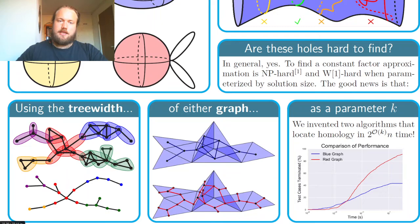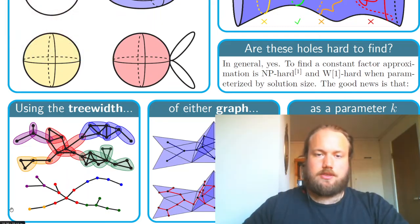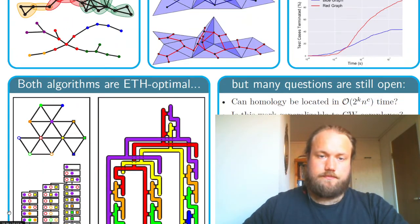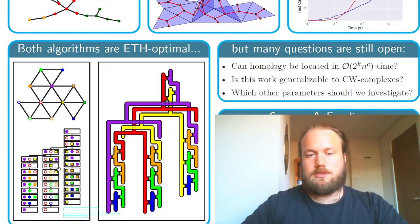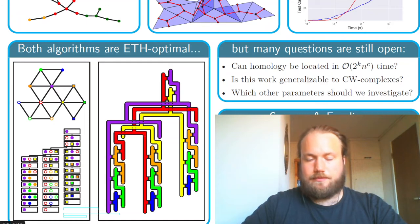We also proved the ETH optimality of these algorithms using a reduction from the max cut problem parameterized by tree width. The reduction takes instances of max cut and transforms the graph in this problem into a space as shown in the figure to the left. This reduction sends graphs with low tree width to spaces whose underlying graph have low tree width as well.